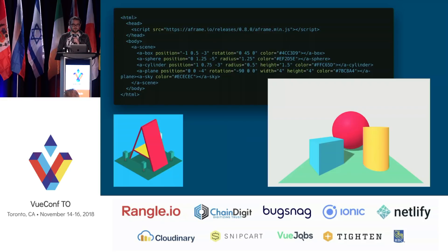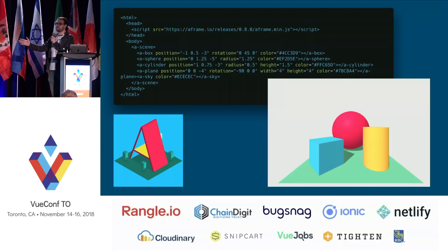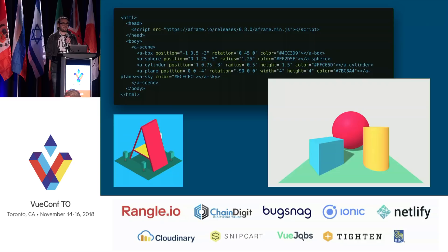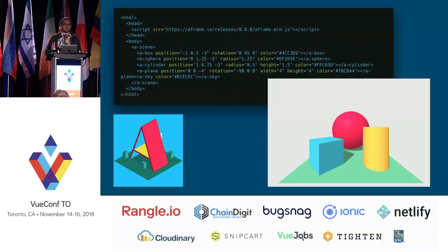For those of you that aren't familiar, this is A-Frame. A-Frame is a project that was developed by Mozilla, and it lets you define a collection of primitive shapes and a 3D scene in the DOM. As we've learned over the course of these two days, the DOM is actually not really that performant. Wouldn't it be great if we could use the virtual DOM instead?